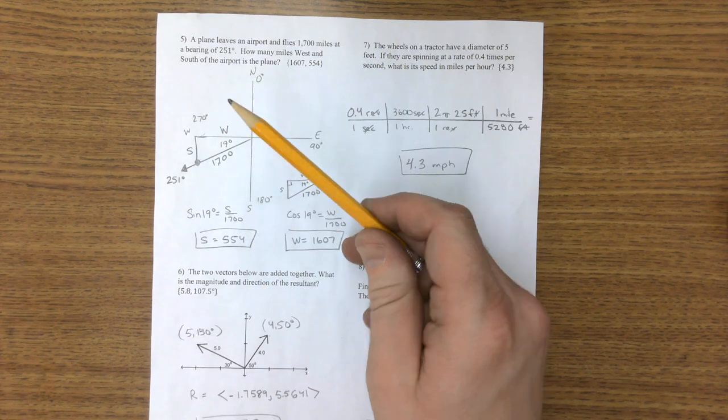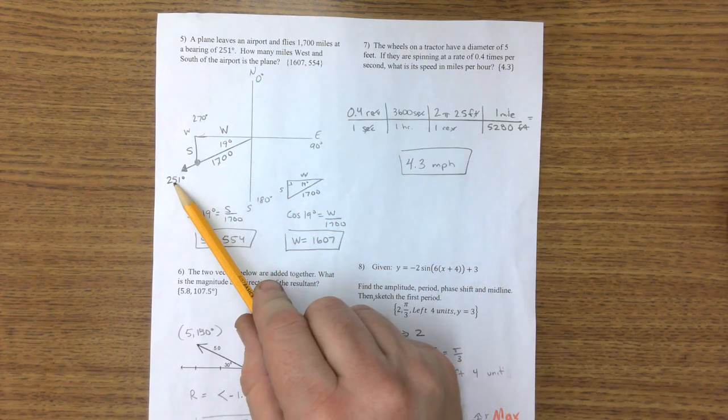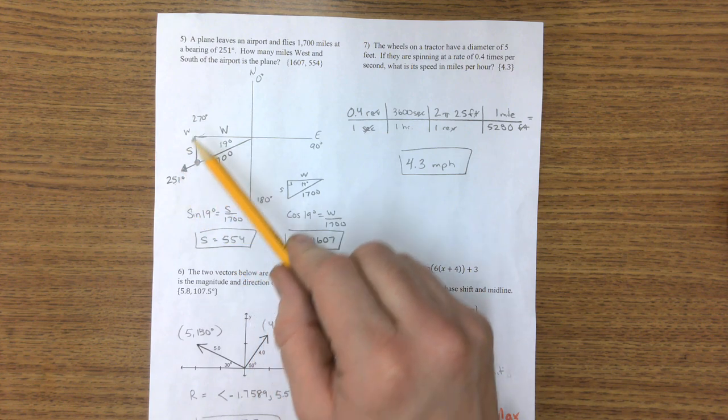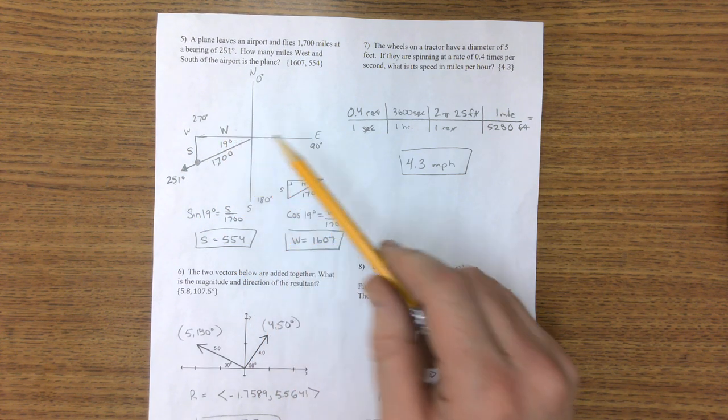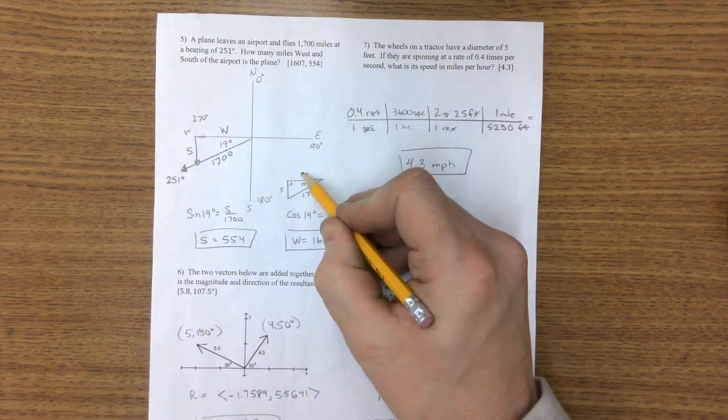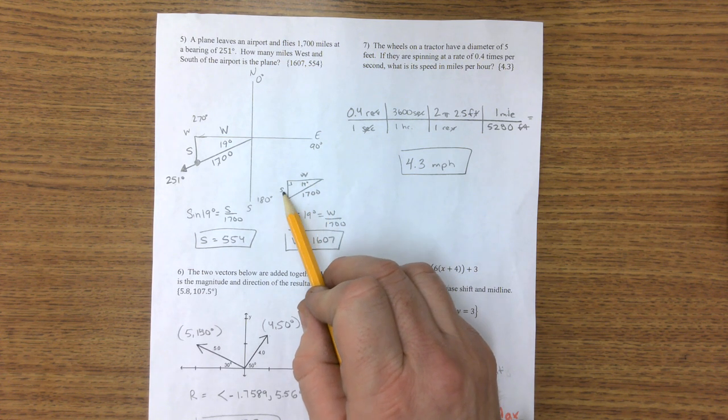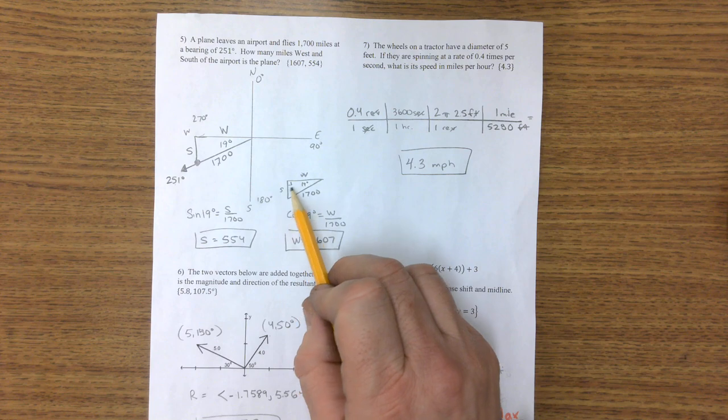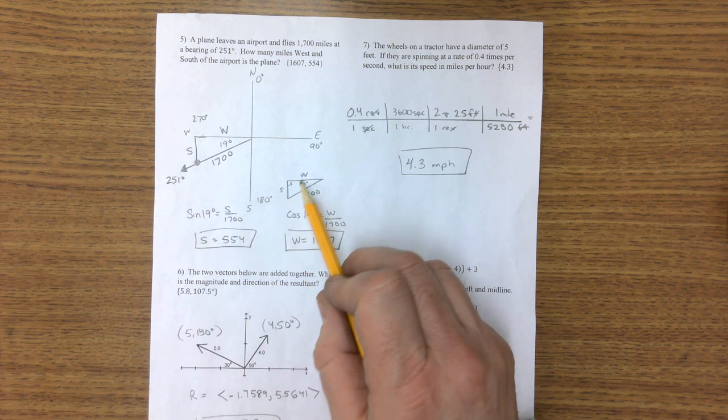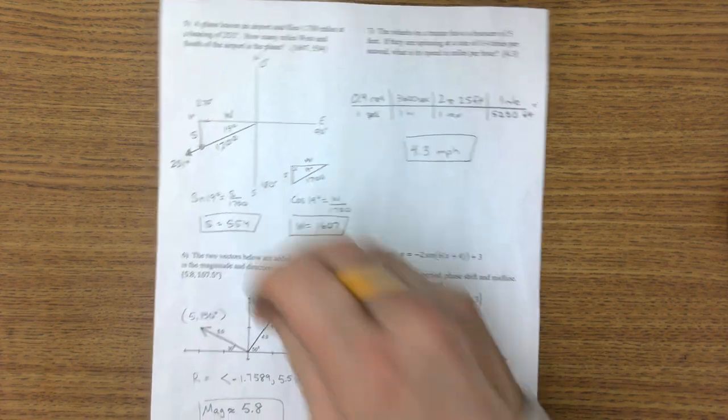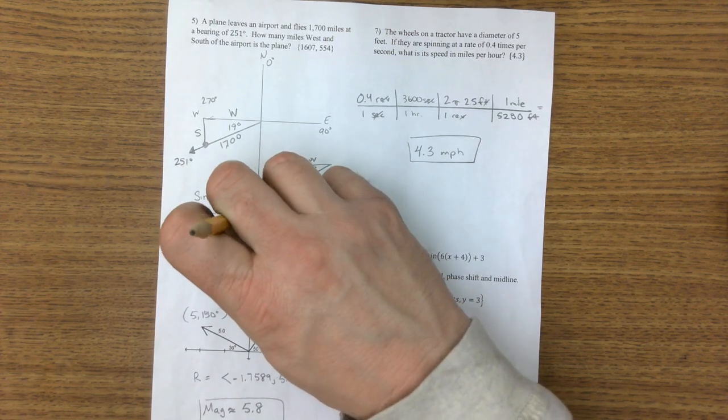On the back, a plane leaves an airport flying at a bearing of 251. If that's 251 and this is 270, that's 19 degrees. So I just come down, I draw my little triangle here, and it's 19 degrees here. I need a west and a south. The south is a sine function, and the west is a cosine function, and you can do the math. I believe it rounded to 253.